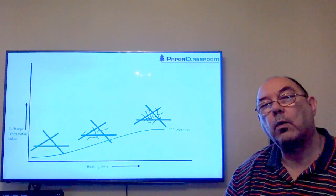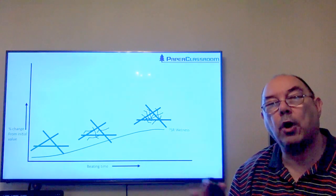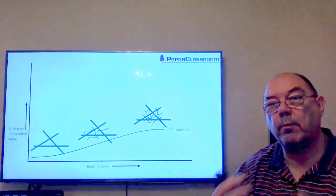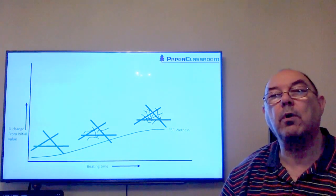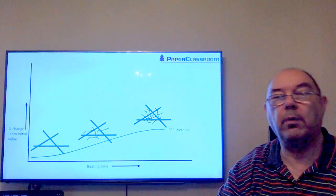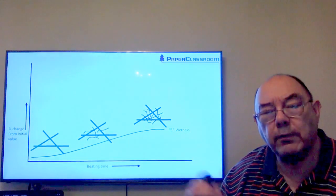Although we set up our beater or refiner to do fibrillation, you always get a mixture of fibrillation and shortening, so you've got to take into account what happens with the shortening as well.